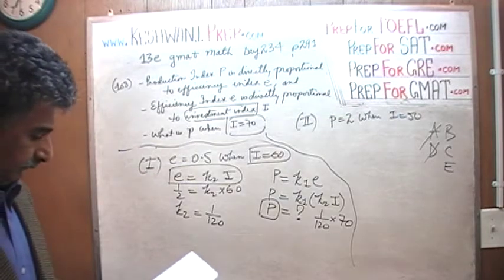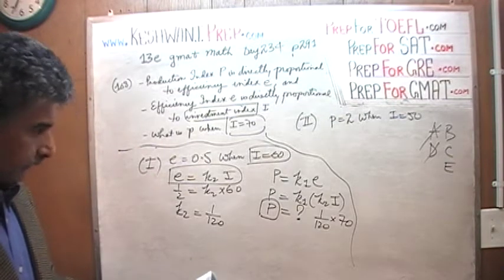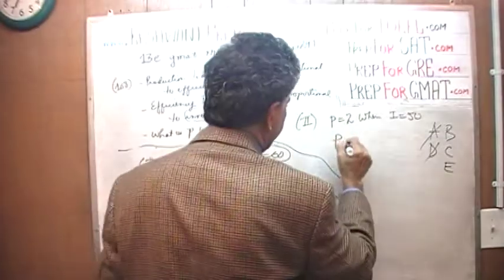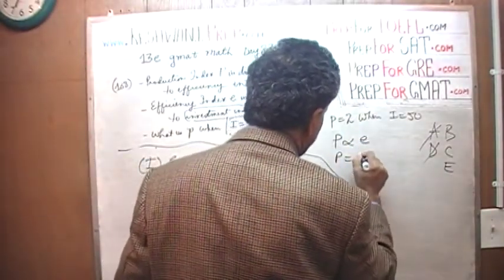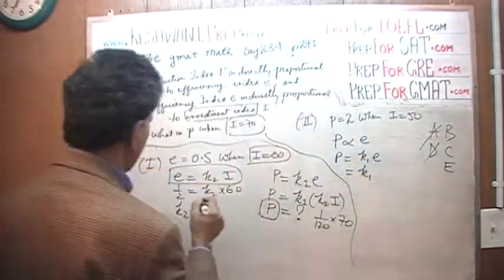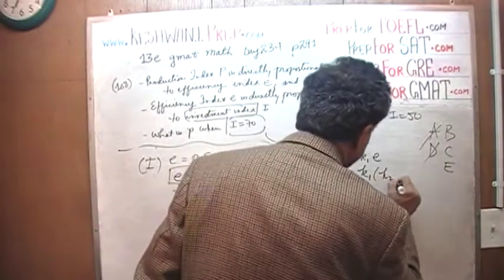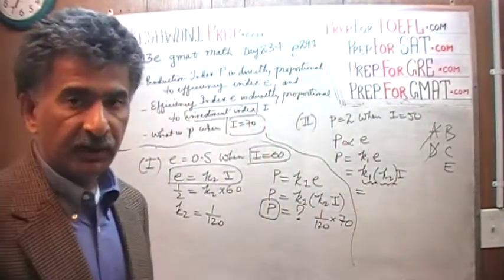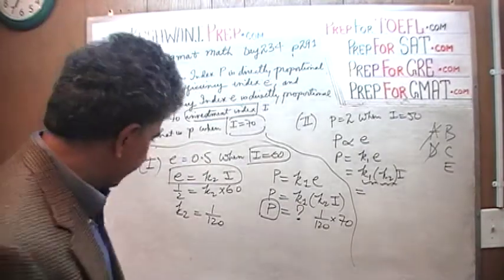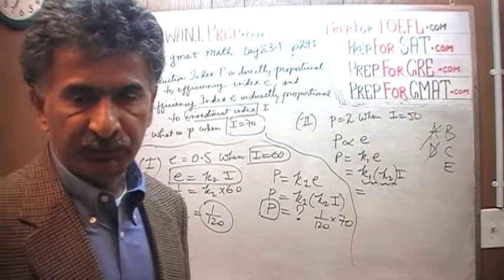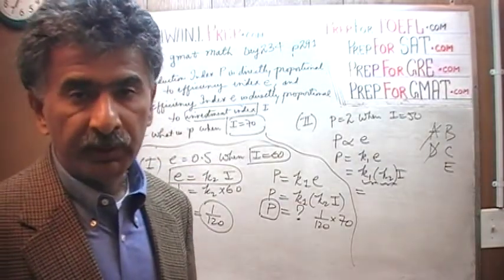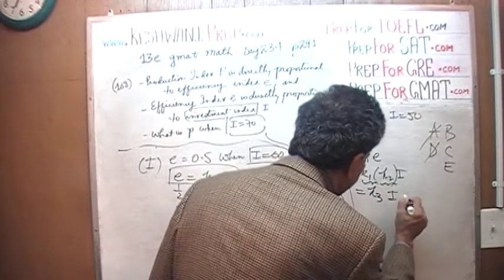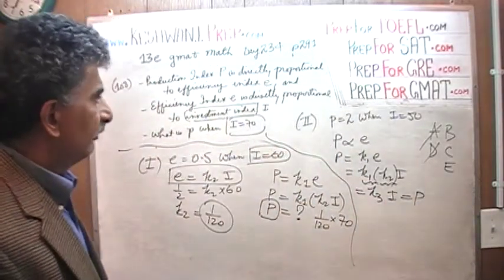We know that P is directly proportional to E. So we know P equals K1 times E, and E we found out was K2 times I. Since this is a constant, and this is a constant, when you multiply a constant by a constant, that's also a constant. It's a constant quantity, let's call it K3, and that's I, and that equals P. There we go, we are done.